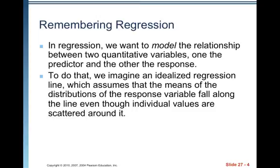In regression, we want to model the relationship between the two quantitative variables, one the predictor and the other the response. To do that, we imagine an idealized regression line, which assumes that the means of the distributions of the response variable fall along the line, even though individuals are scattered around it.